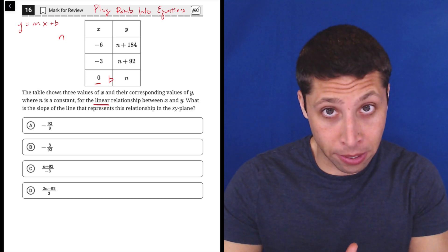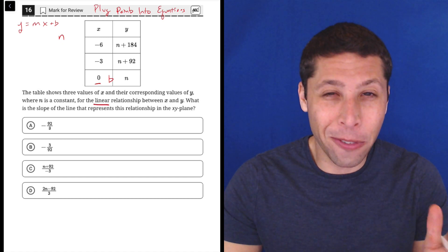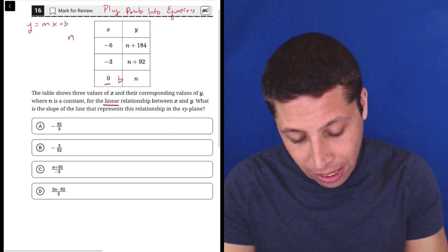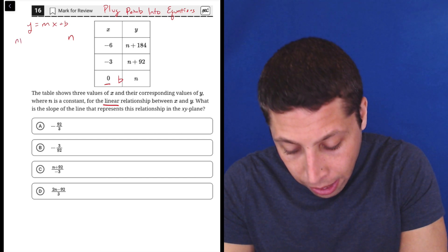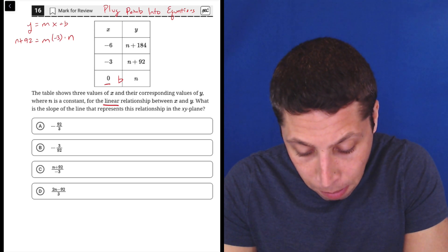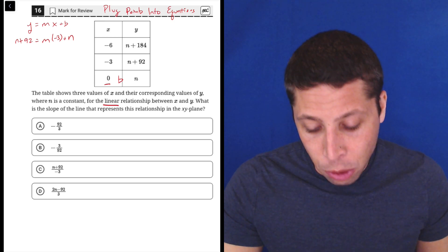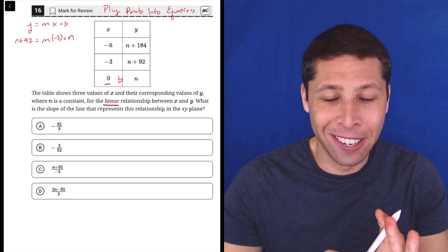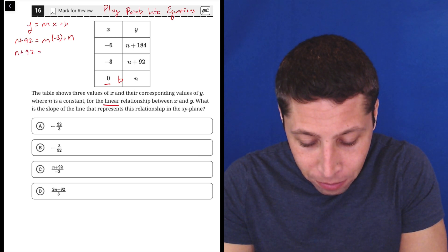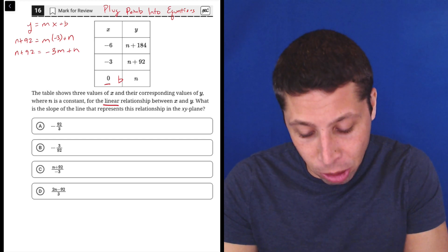Then I'm going to choose a different point to plug in for X and Y so that I get rid of all the variables and I just have the M. And I'm not quite right there, but you'll see. So N plus 92, that's my Y. N plus 92 is equal to M and then negative 3 is my X and then plus N is the plus B. So I know I said we're only going to have one variable and we have the N, but watch what happens. Let's rearrange this a little bit.